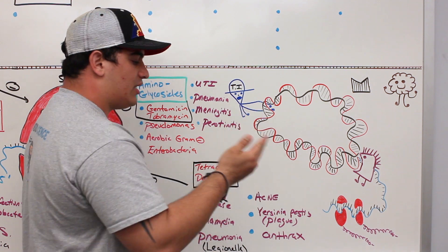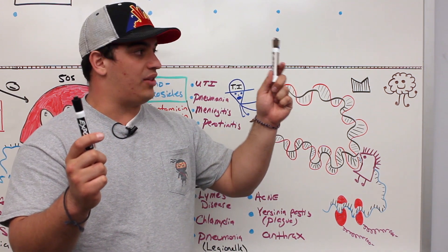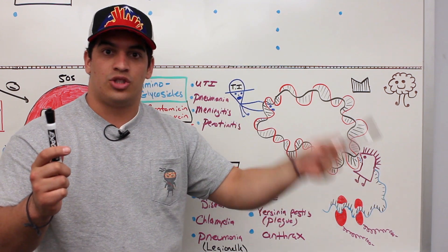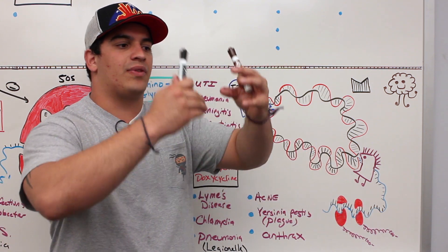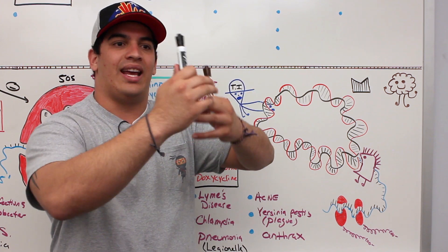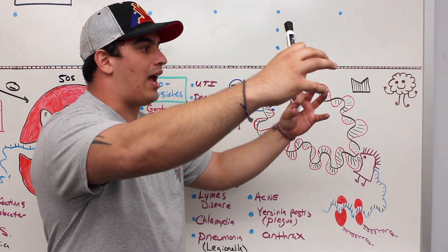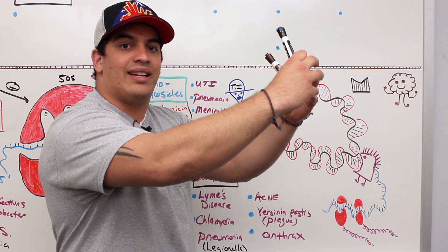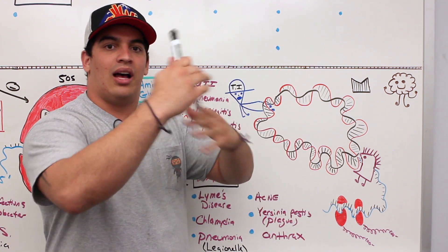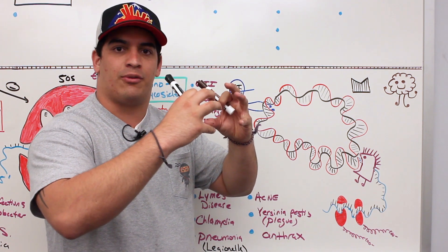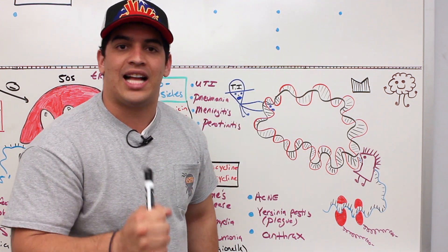What topoisomerases do — imagine I have two hands. One hand is the actual enzyme that cuts the phosphodiester bond, the backbone of the actual DNA. That allows the super coils to alleviate and get rid of some of that tension. The other hand takes the DNA fragments that were broken and relinks them back together. So one hand cuts the phosphodiester bond, allows it to unwind, and then the nicked parts are fused back together.